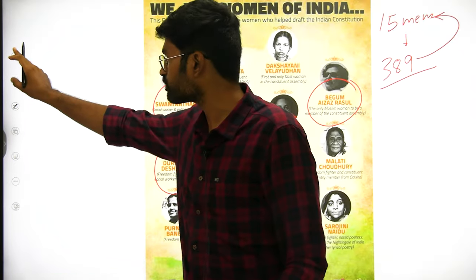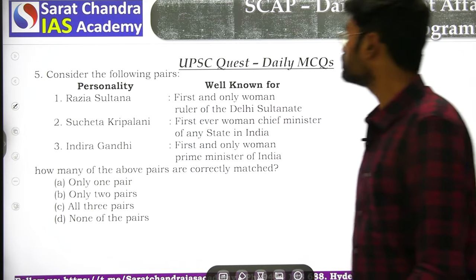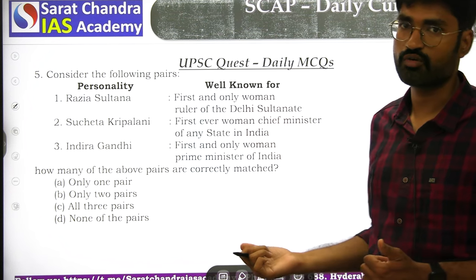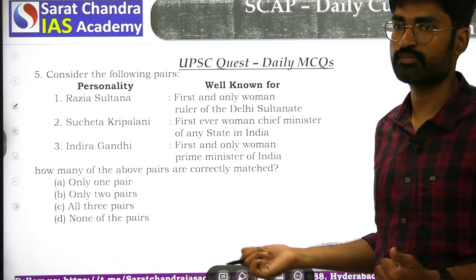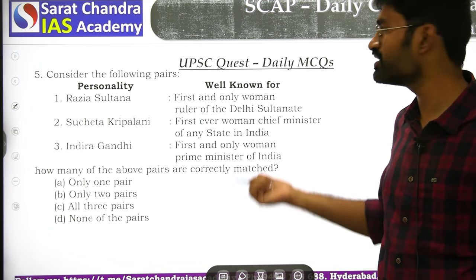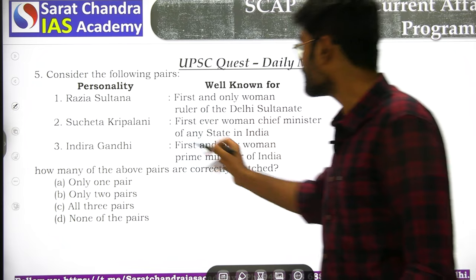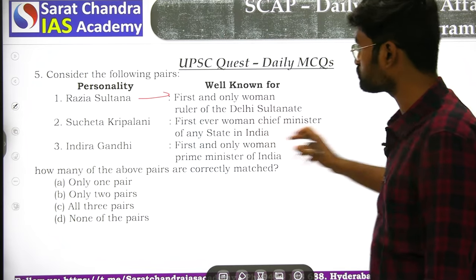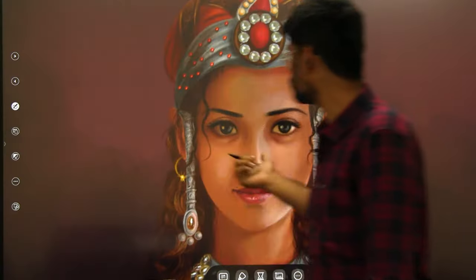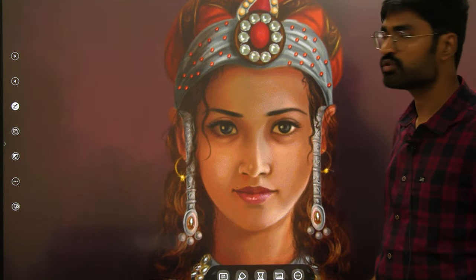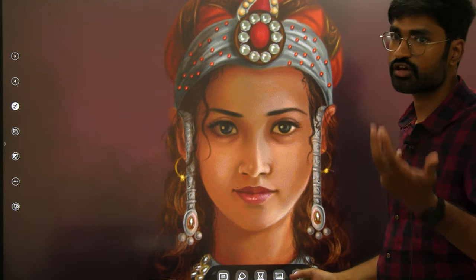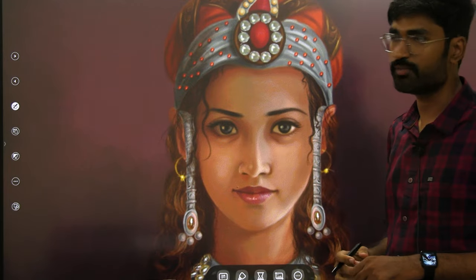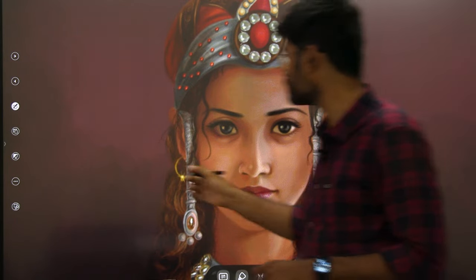Today, 8th March, is International Women's Day. The fifth question is about Razia Sultana, who was the first female ruler of the Delhi Sultanate.